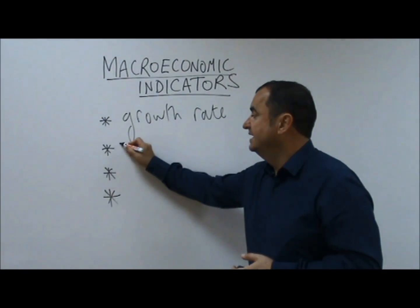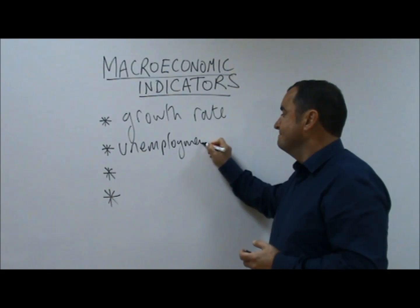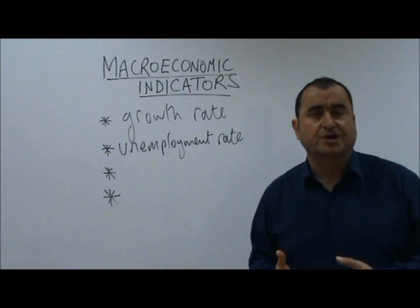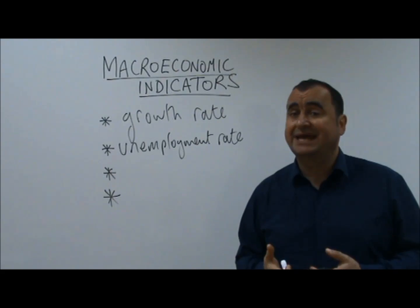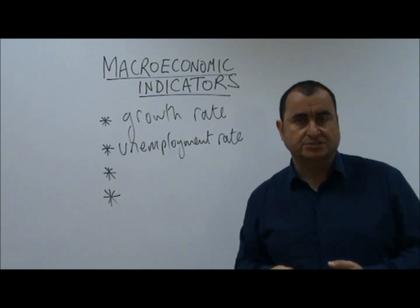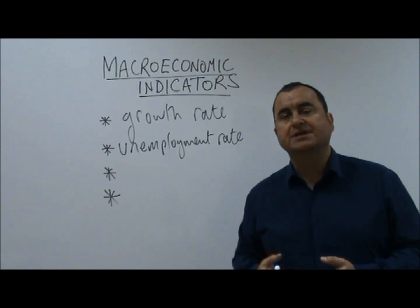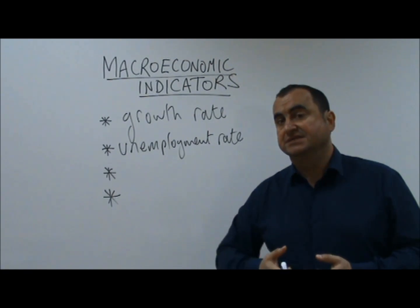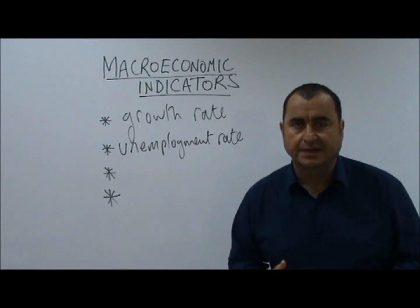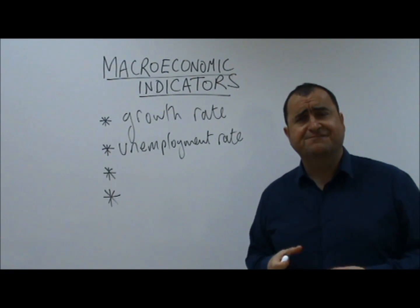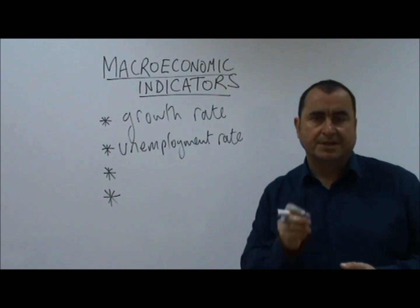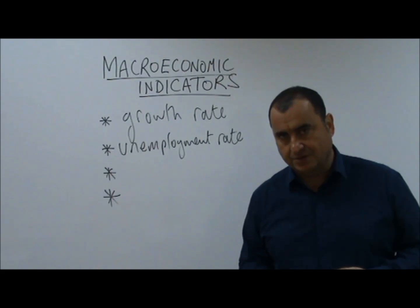A second indicator is the unemployment rate, which records the proportion of people in the workforce who are seeking work but cannot find paid employment. There is a precise way of measuring this called the ILO — the International Labour Organization — count. This is done monthly because it is incredibly important data, and it is a key macroeconomic indicator.